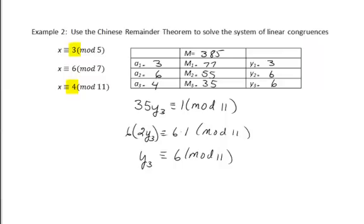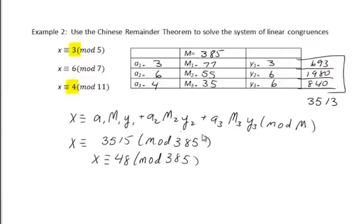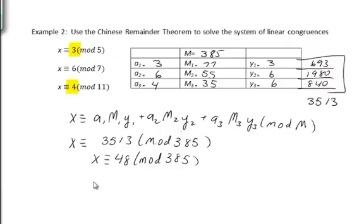Now we plug into the formula for x: x = A1·M1·Y1 + A2·M2·Y2 + A3·M3·Y3. Multiplying across each row of the table: A1·M1·Y1 = 693, and so on. Totaling those values gives x = 3513.